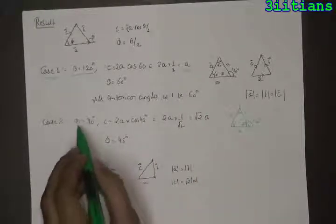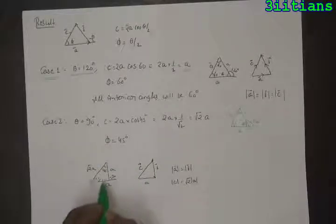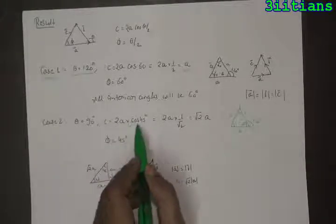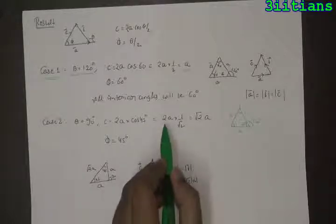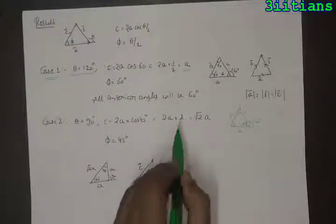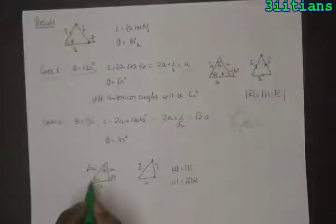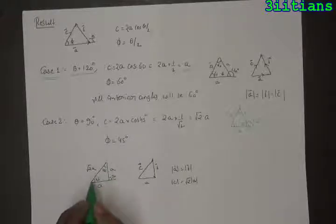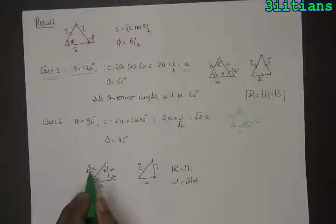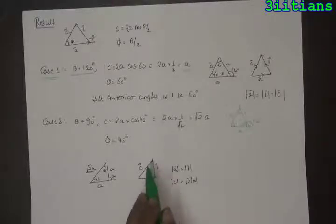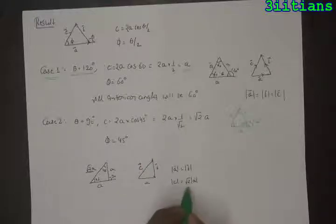Similarly, if theta is 90 degrees and two vectors of the same magnitude are to be added, c will become equal to 2a cos 45, which equals 2a times 1/root 2, or root 2 times a. This can also be obtained from geometry: it is a right-angle triangle with two equal sides, so the third side equals root 2 times a. In vector form, a vector plus b vector equals c vector, where a and b have the same magnitude and the third side has magnitude root 2 times a.